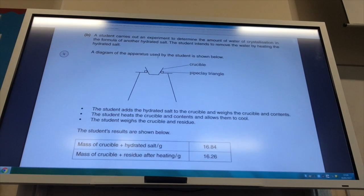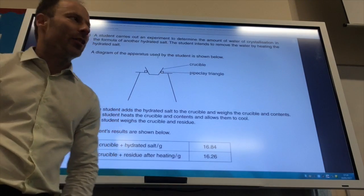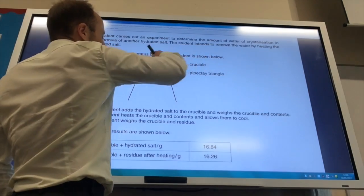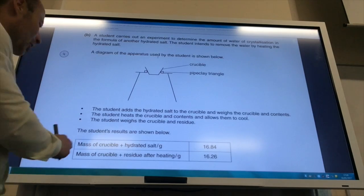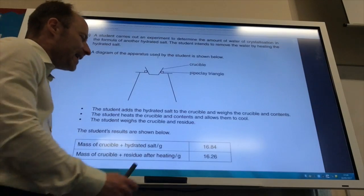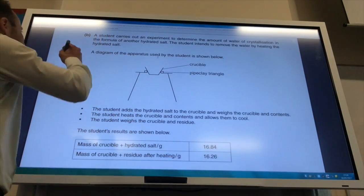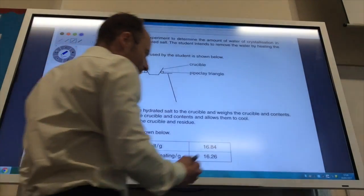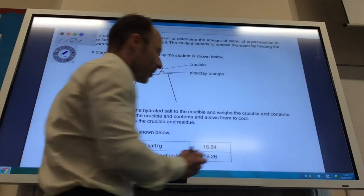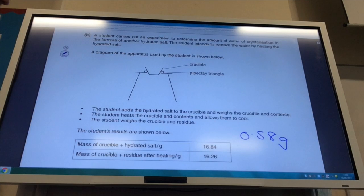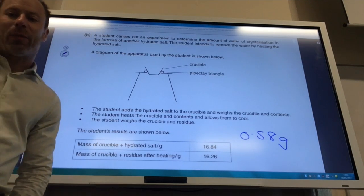Right, so for the next question, it tells me how we carry out the experiment. And you've probably done this experiment as part of your practical component of the course. We've got a crucible, a pipe clay triangle, and we're going to heat it up. It tells me the mass of the crucible and the hydrated salt is 16.84 grams. And the mass of the crucible and the residue after heating is 16.26 grams. And from that, we can work out that the water lost is the difference between those two, which is going to be 0.58 grams of water that we've lost.